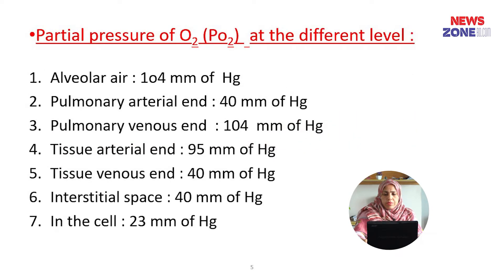The partial pressure of oxygen at different levels: Alveolar air — 104 mmHg. Pulmonary arterial end — 40 mmHg. Pulmonary venous end — 104 mmHg. Tissue arterial end — 95 mmHg. Tissue venous end — 40 mmHg. Interstitial space — 40 mmHg. And in the cell, it is 23 mmHg.